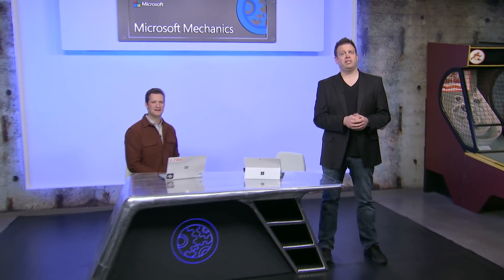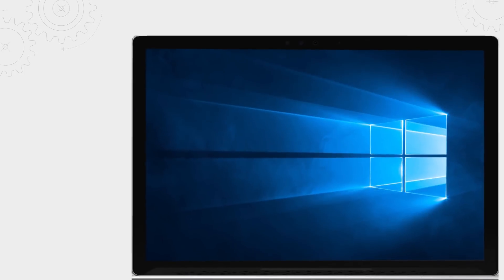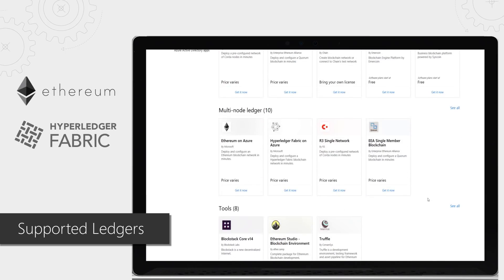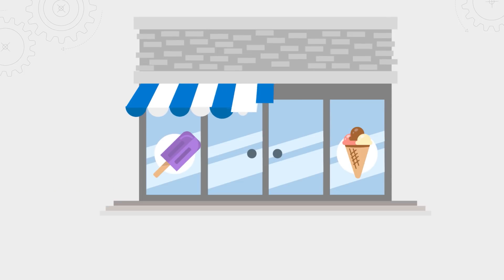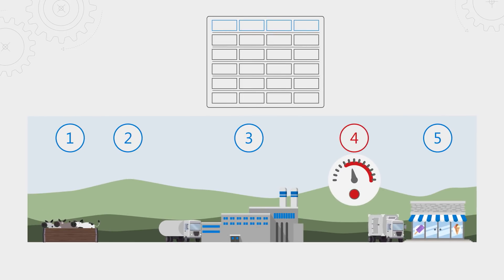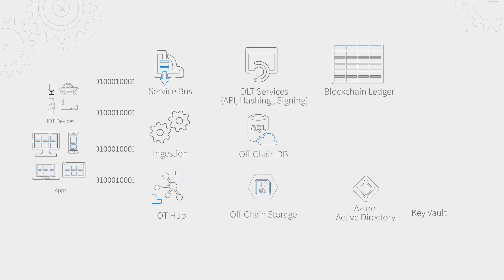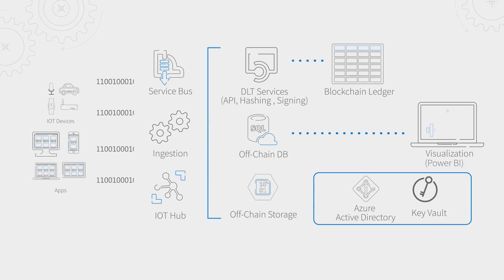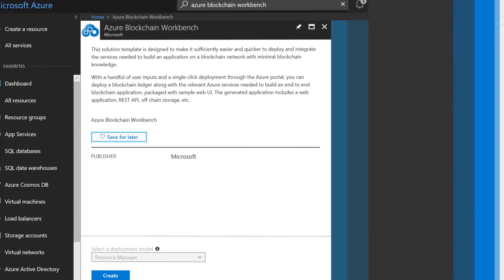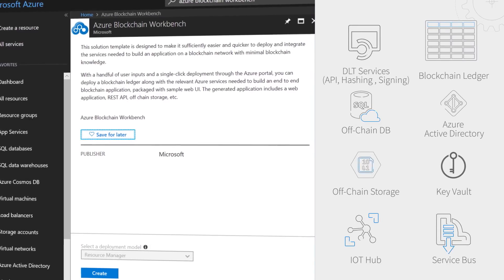Coming up, we kick off a two-part series on blockchain and the work that we're doing to help you harness the technology at Microsoft Azure. We're going to start by explaining how blockchain works, its broader application beyond cryptocurrency and for any multi-party processor workflow, and what Microsoft is doing to make it easier for you to spin up the required infrastructure and services to harness the blockchain and develop apps using the new Azure Blockchain Workbench.